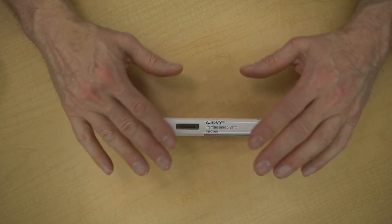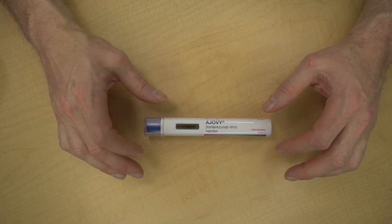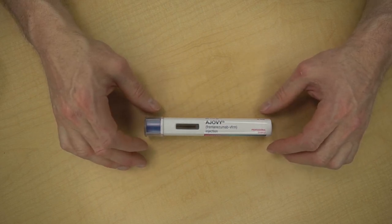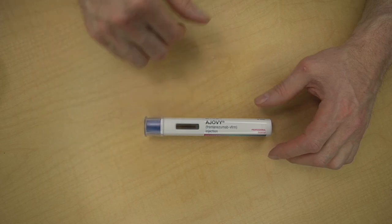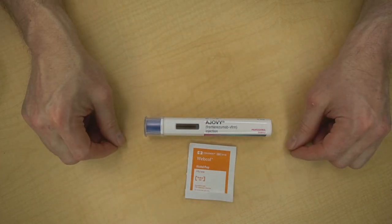Inject into healthy skin. That means no rashes, birthmarks, scars, tattoos, or stretch marks. And avoid injecting into an artery or a vein. Once you've found your area or areas, clean them with an alcohol swab and let dry.